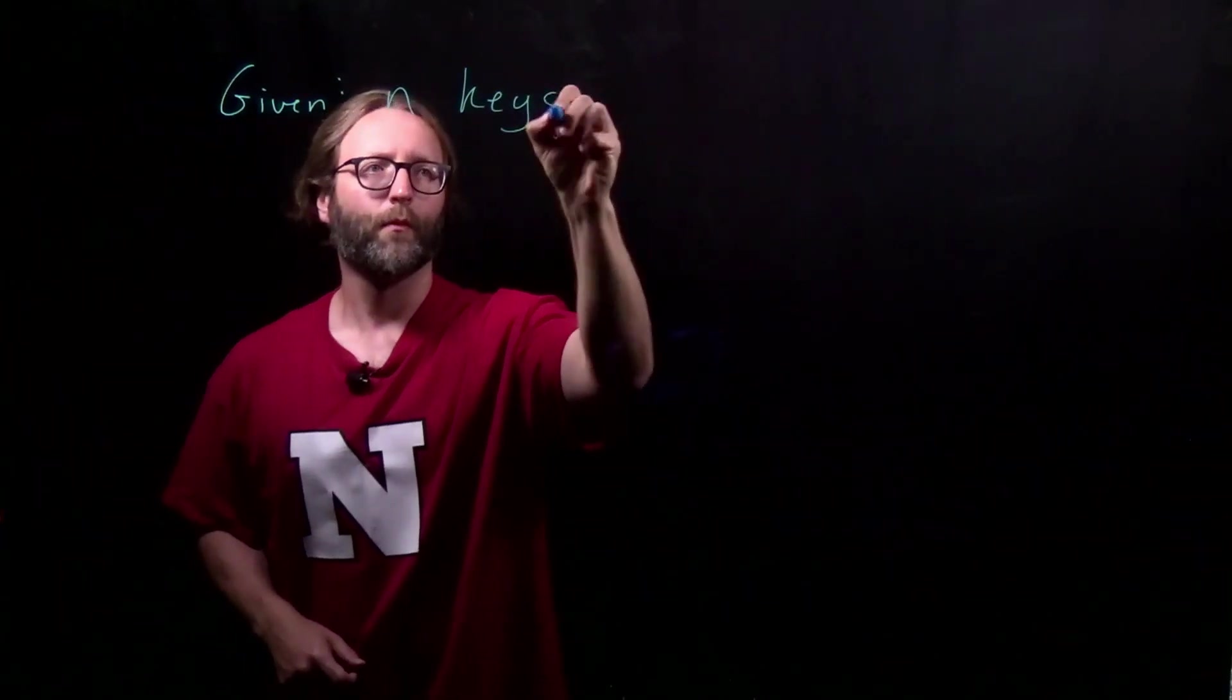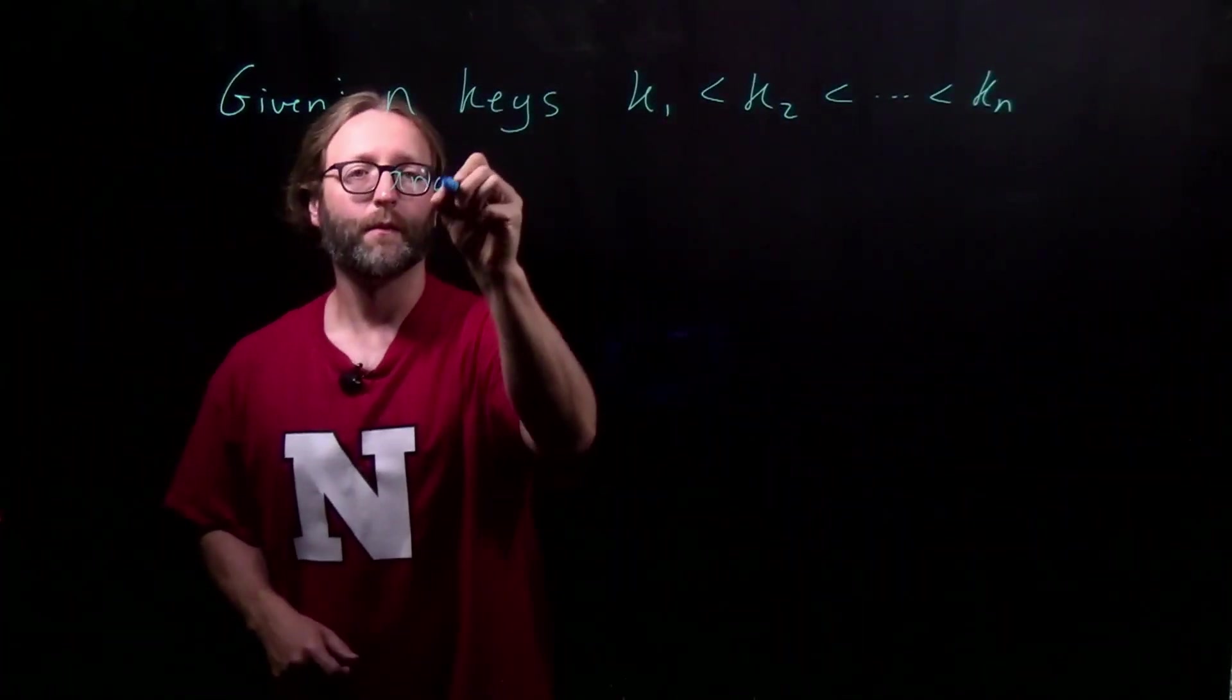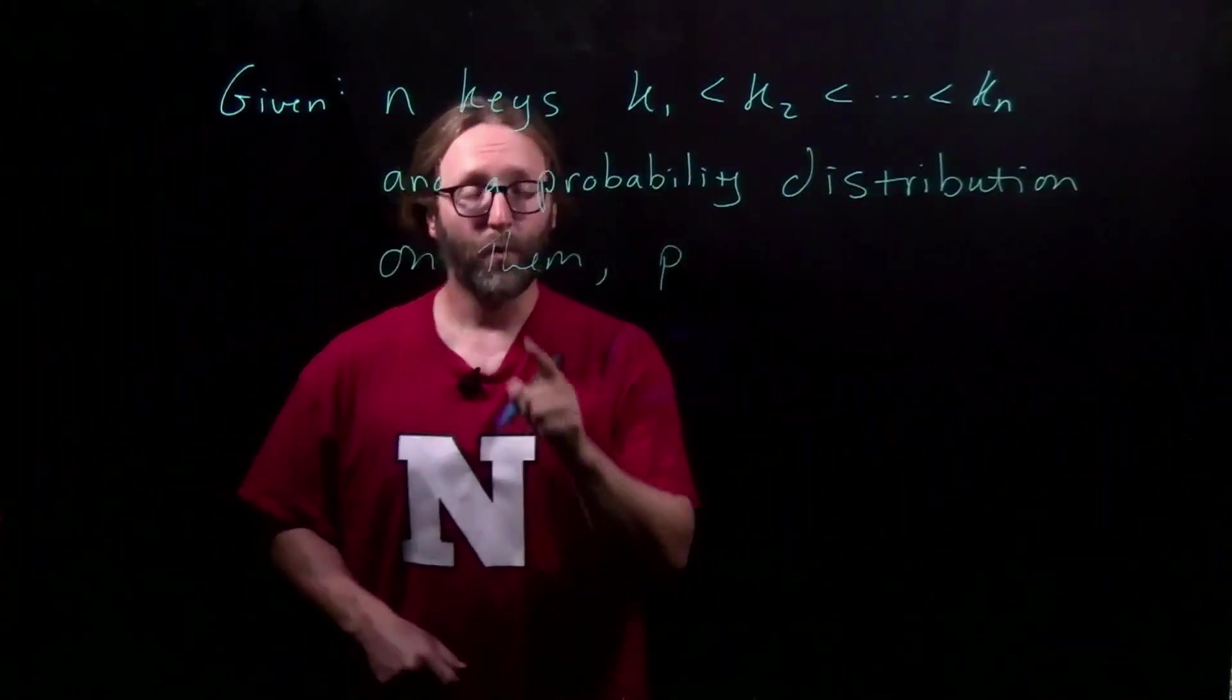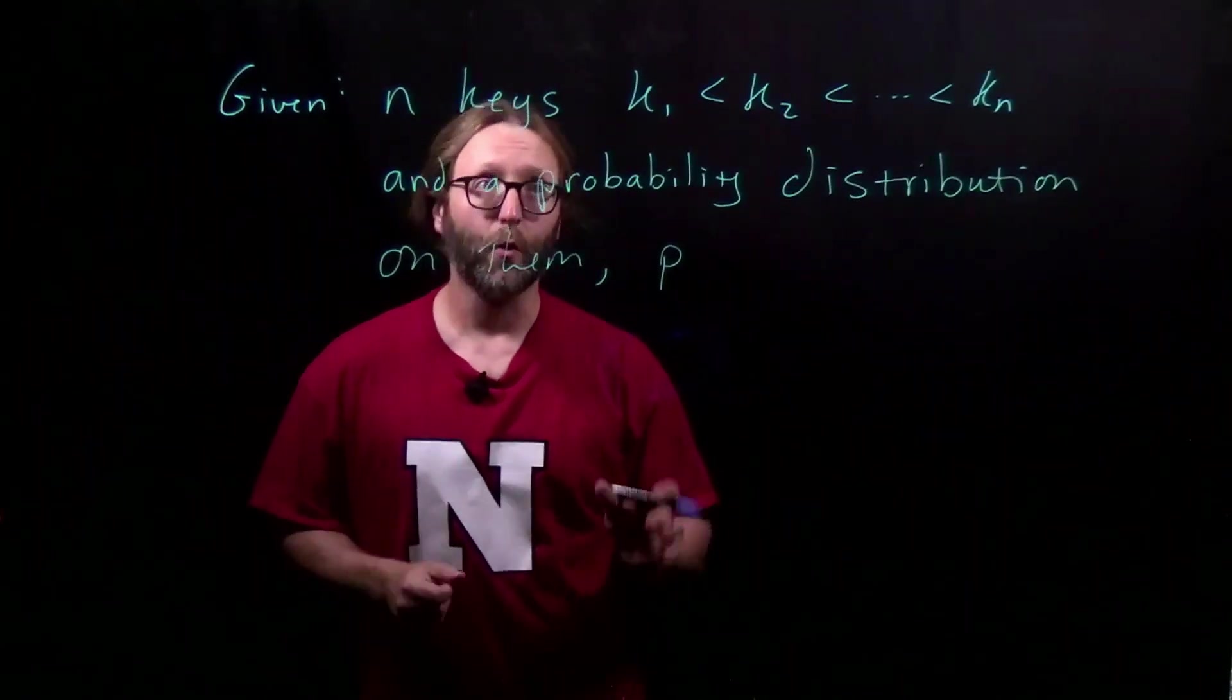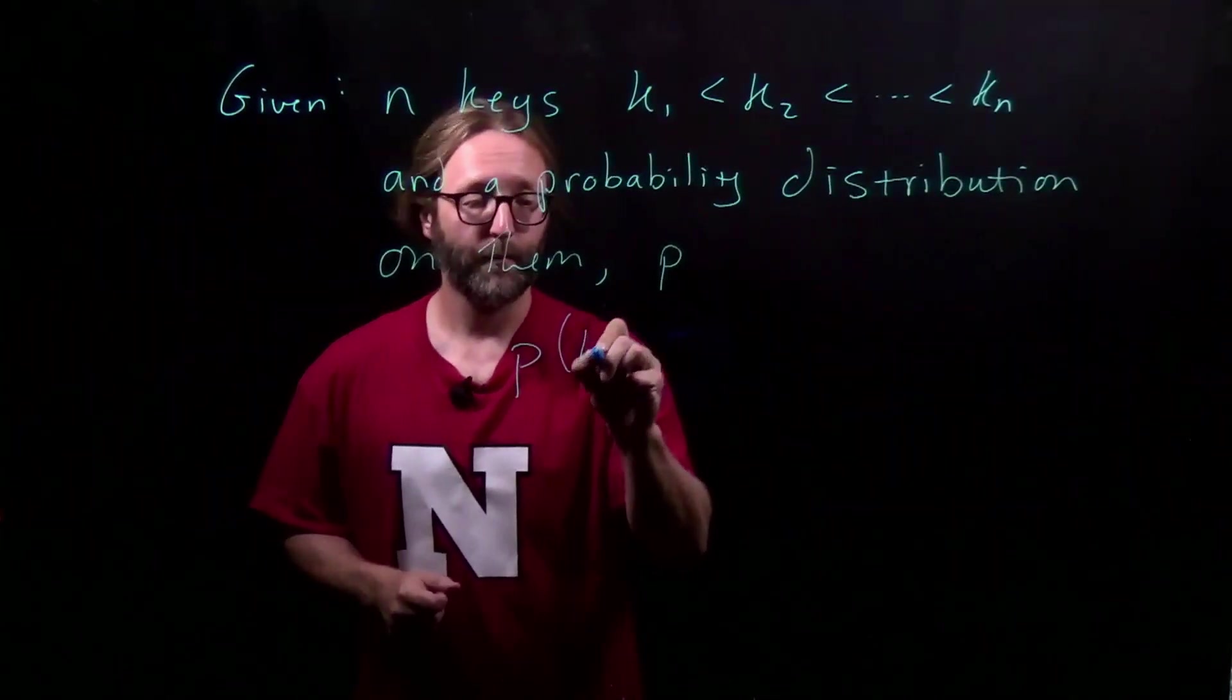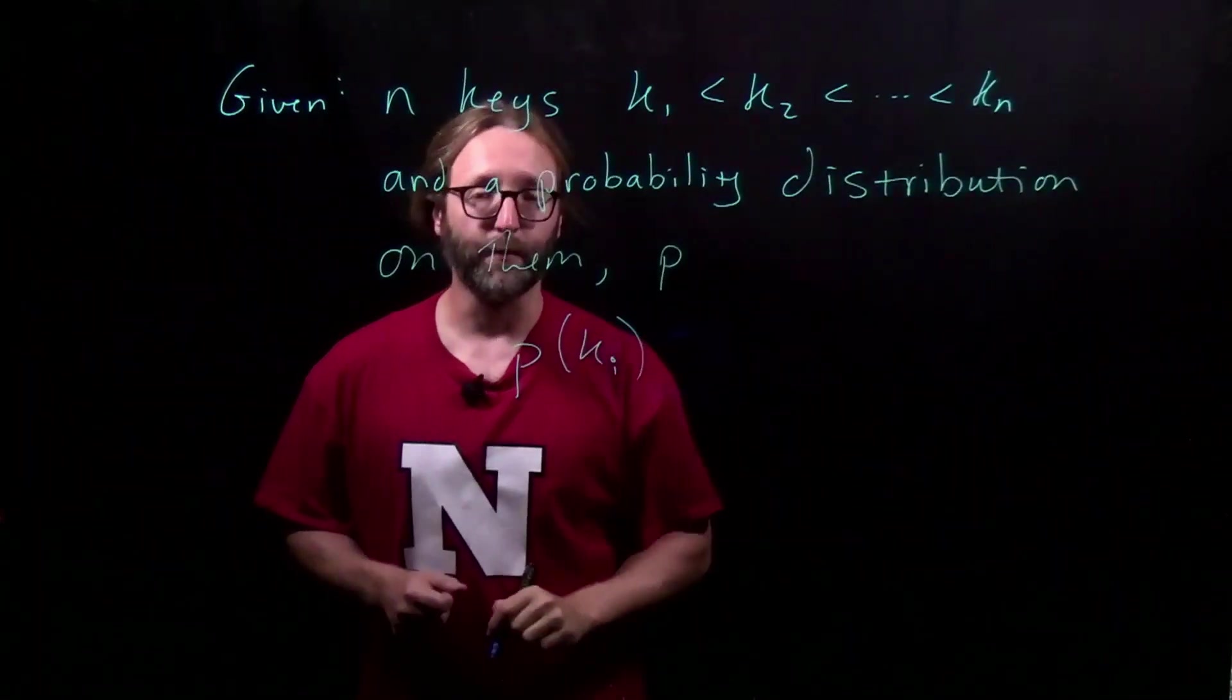So, consider the following scenario. We're given n keys with a probability distribution. This probability distribution is capturing the likelihood that you're going to search for each one of these keys. p(ki) is the probability that you're searching for this key.